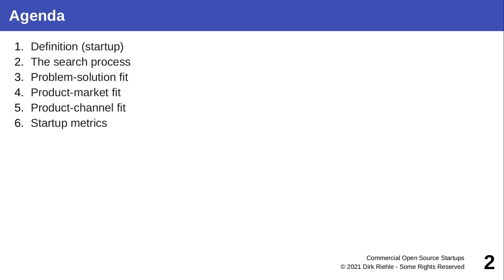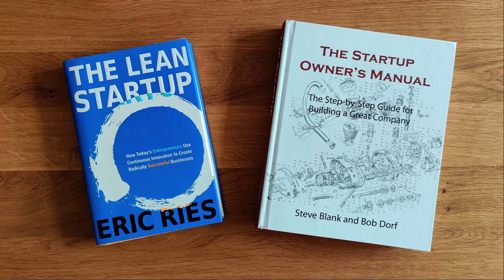For this we first have to understand startups in general, and we will go through the definitions and the growth phases of a potential startup and some relevant metrics, because that helps us best understand it. This lecture is based mostly on these books, which are common standard by now: The Lean Startup by Eric Ries, and the customer discovery process — respectively the Startup Owner's Manual — a second book by Steve Blank.